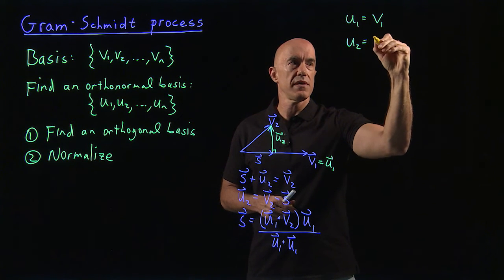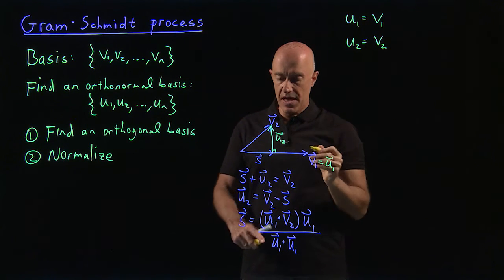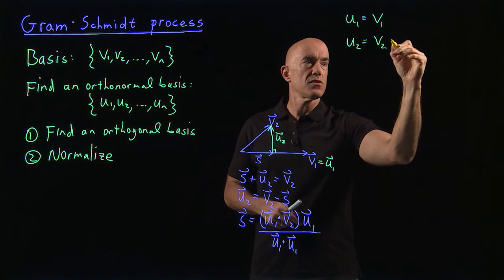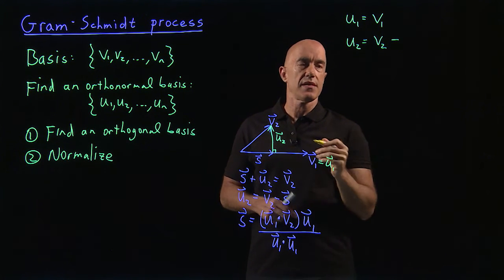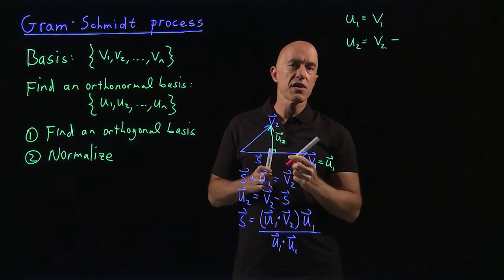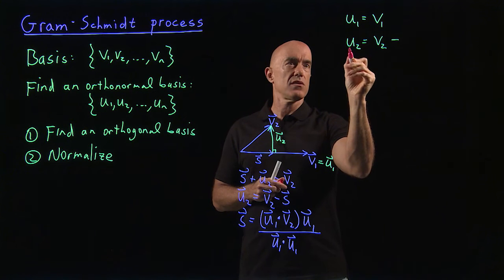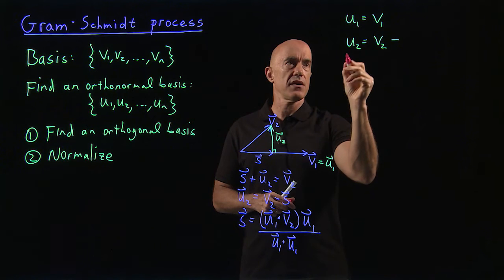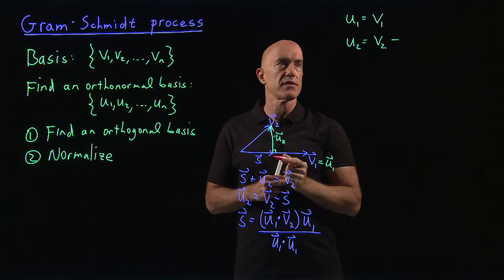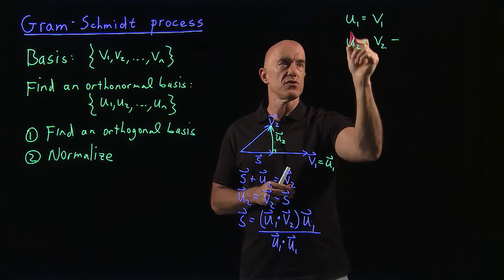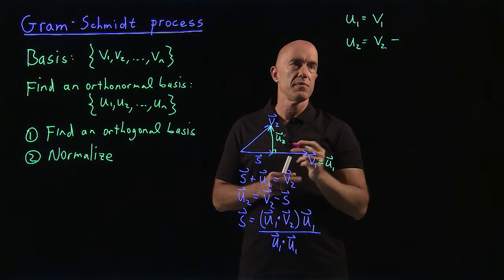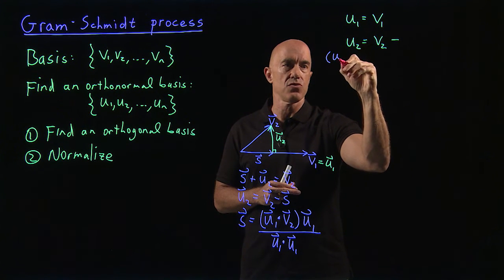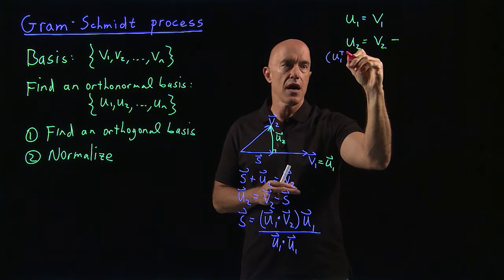Now the second orthonormal basis, U2, is going to be V2. But then we need to subtract the bit that's along U1. That's the idea. So we're going to subtract something that's along U1. So to figure out what to subtract, we want U1 and U2 to be orthogonal, right? The meaning of orthogonal here, if these are column vectors, is that U1 transpose times U2 is supposed to be 0. So I want to figure this out by multiplying by U1 transpose on the left.